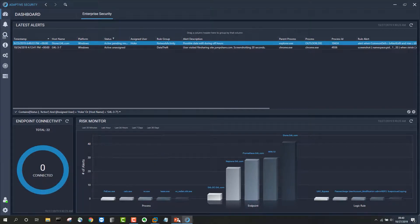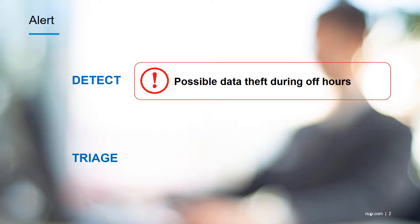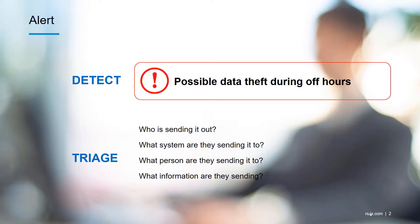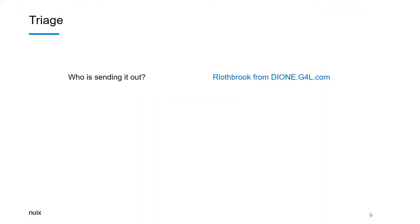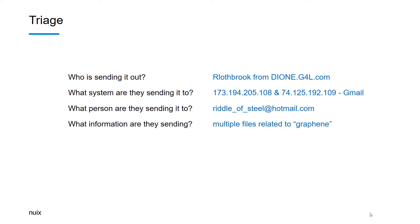To quickly review how we went through this process: we started with detecting data theft during off hours, then asked a series of questions about that event on the fly. The person sending out the data was R. Lothbrook from dione.g4l.com. We found two IP addresses corresponding to Gmail as the destinations. The person it was sent to was riddleofsteel at hotmail.com. The files being sent were multiple files related to graphene technology. And finally, looking at keystroke data revealed they had been looking for jobs and were likely seeking to improve their prospects during a job search.